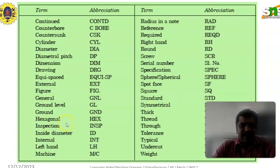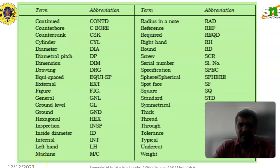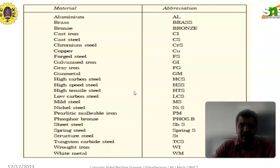Right hand, round, screw, serial number, specification, sphere, spherical, spot face, square, symmetrical, thick, thread, through, tolerance, typical, undercut, and weight — these are all the things used in the abbreviation part. Likewise, based upon the material also, abbreviations will be there. Aluminium means AL.